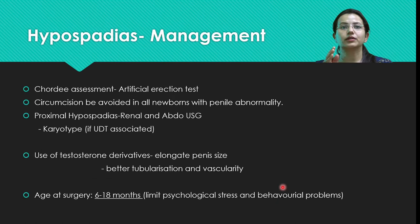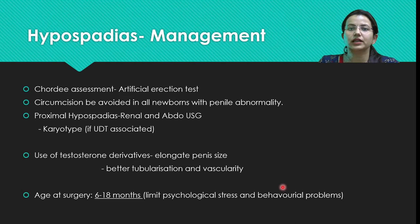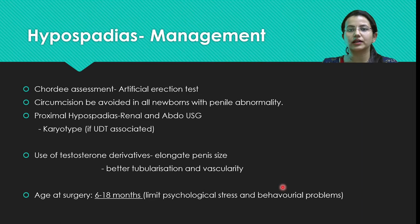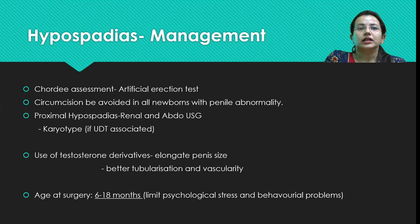Chordee is something one should be very careful about. It can be evaluated on the operating table using an artificial erection test, wherein saline is infused into the corpora and the curvature is documented intraoperatively. If it is more than 30 degrees, chordee must be corrected first, with urethroplasty planned at a later date.